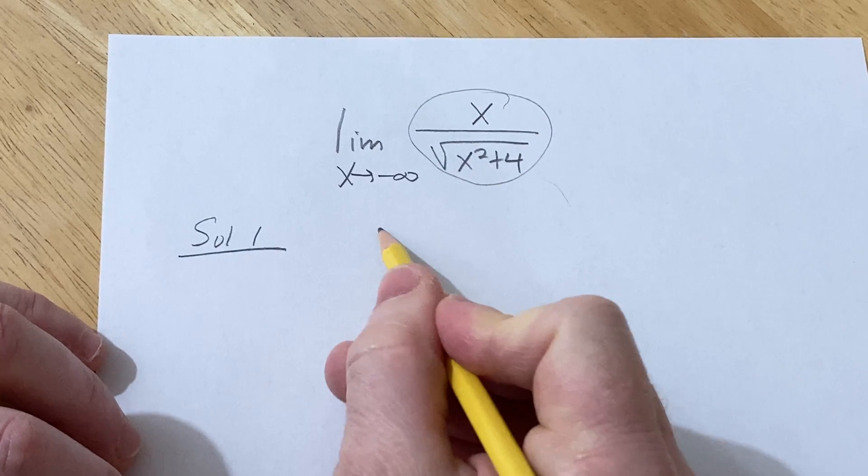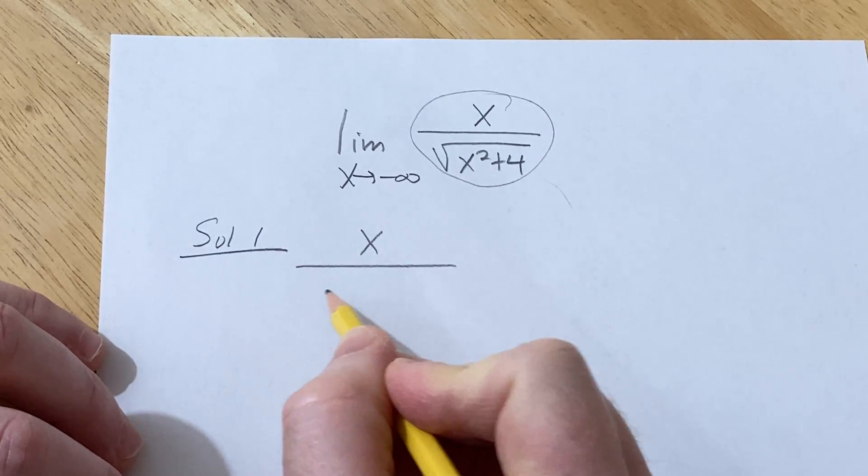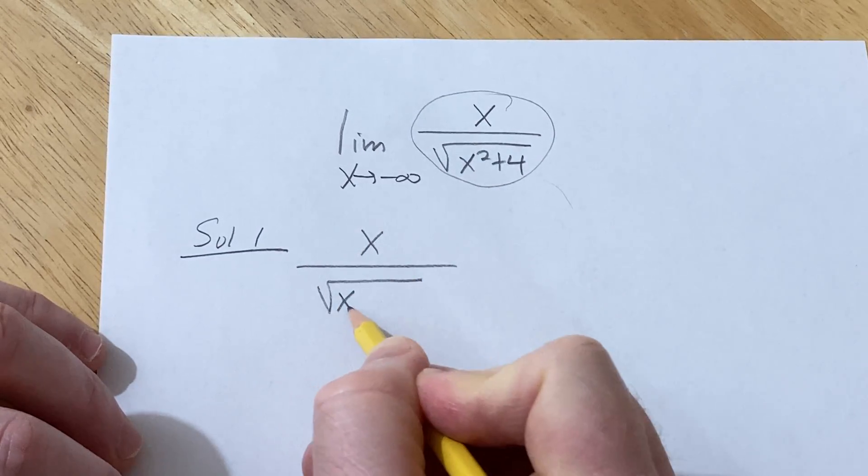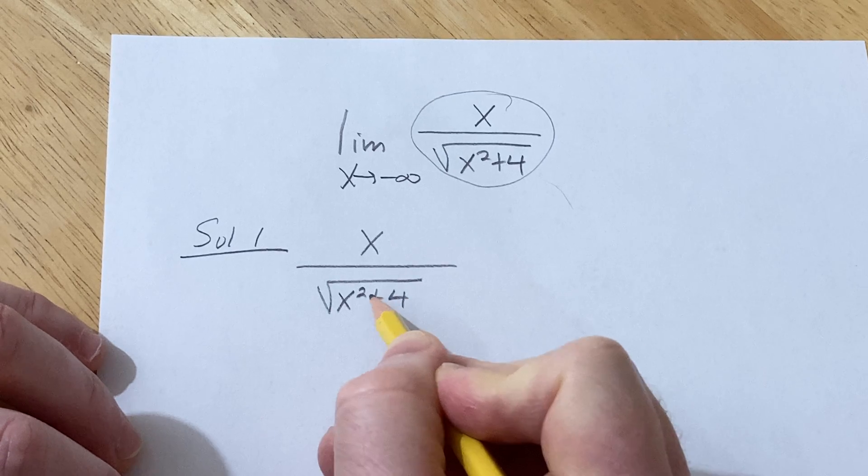I'm just going to go ahead and write this down. This is x over the square root of x squared plus 4.